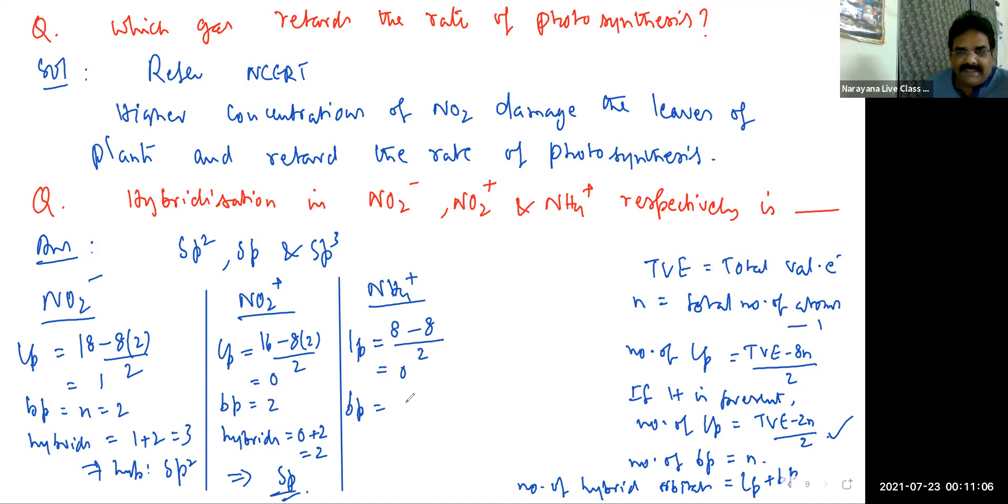So bond pairs, it is equal to N, that is 5 minus 1. Bond pairs 4. So hybrids: 0 plus 4, that means 4. 4 hybrids means it is SP3. So the answer is SP2, SP, and then SP3.